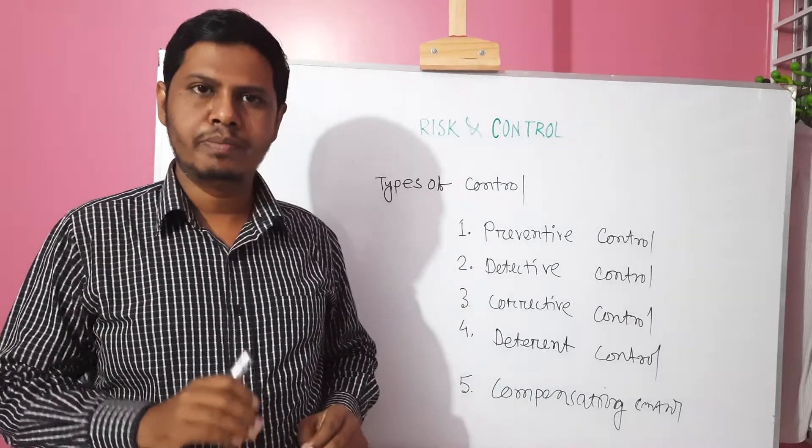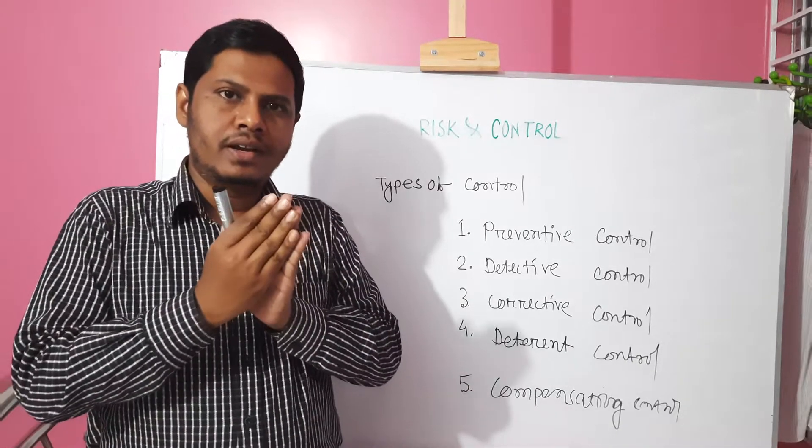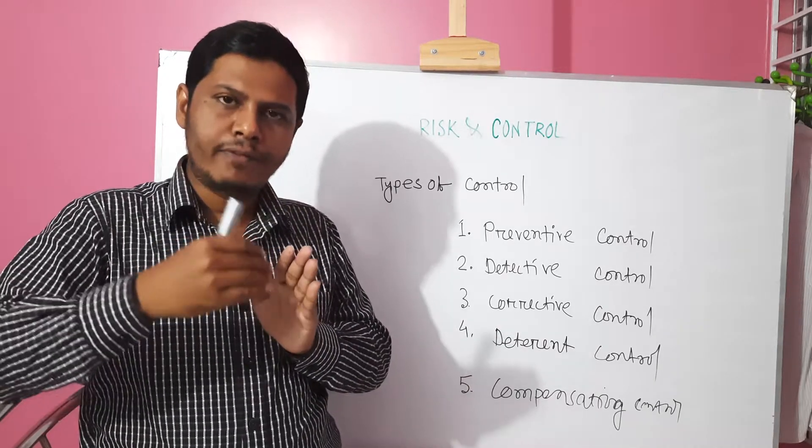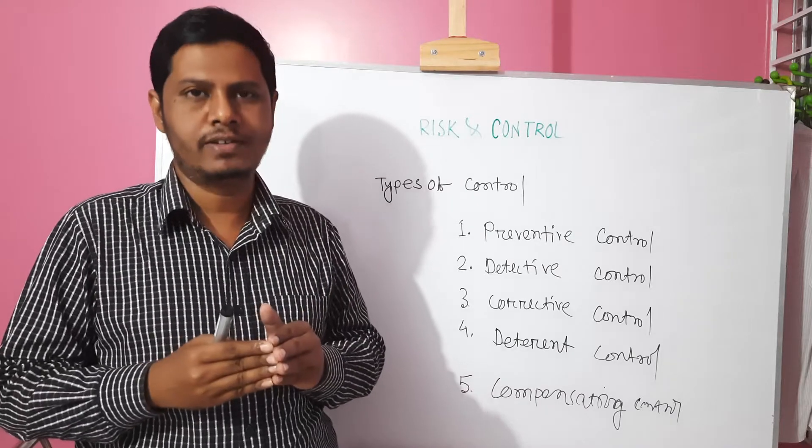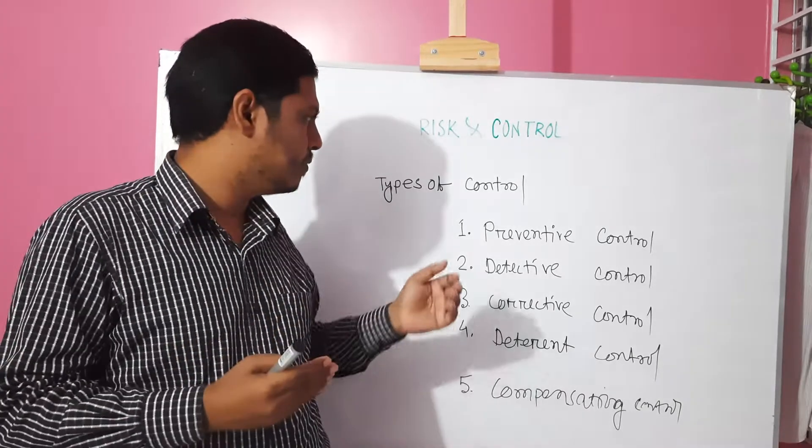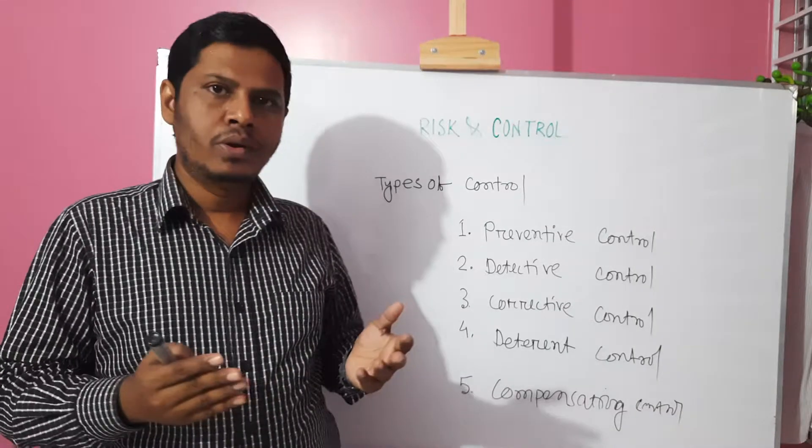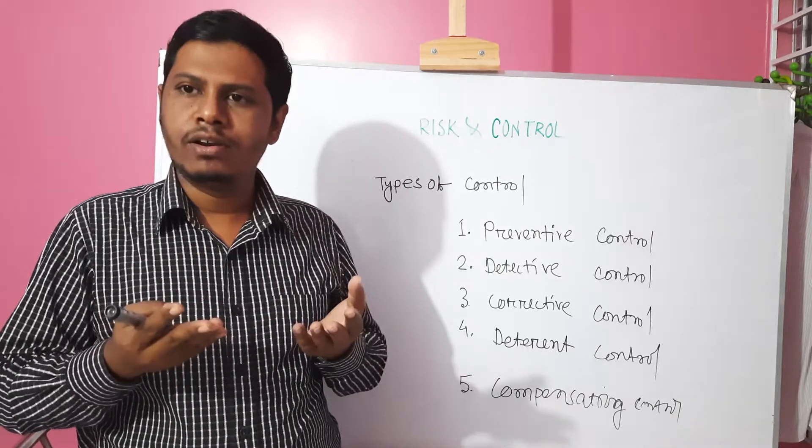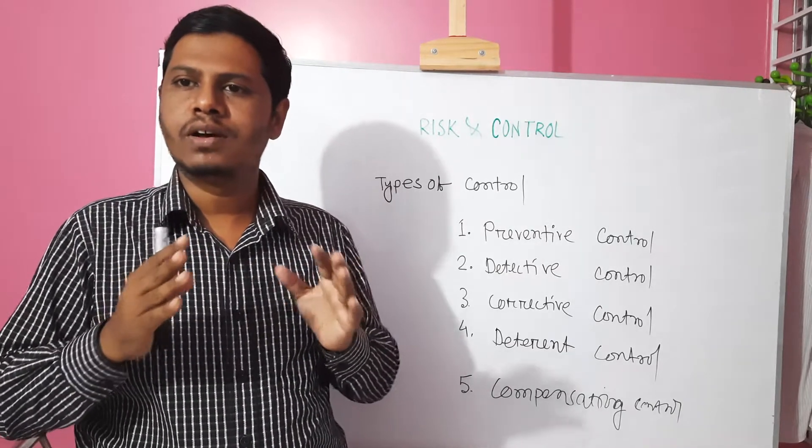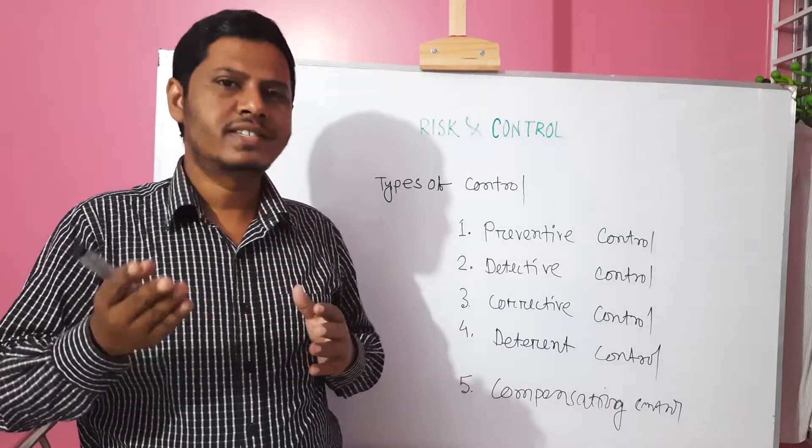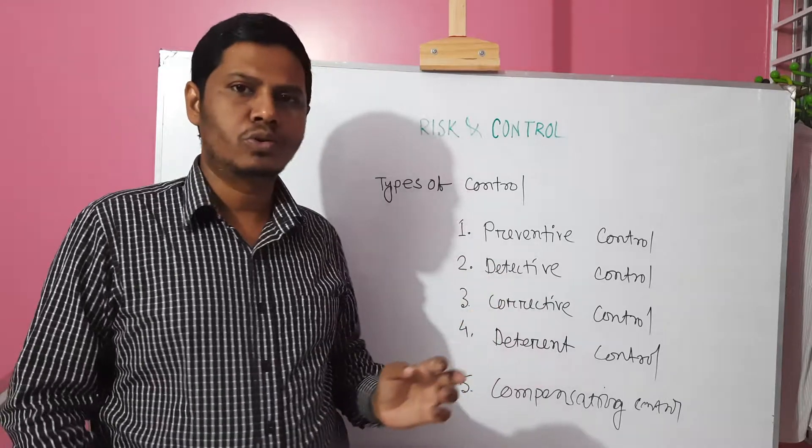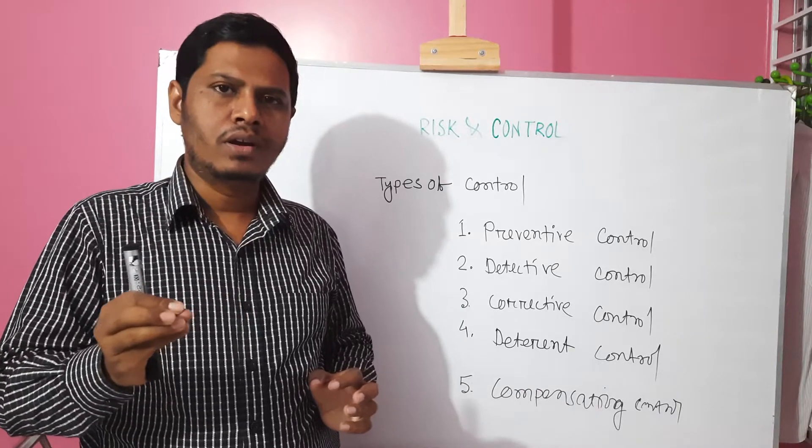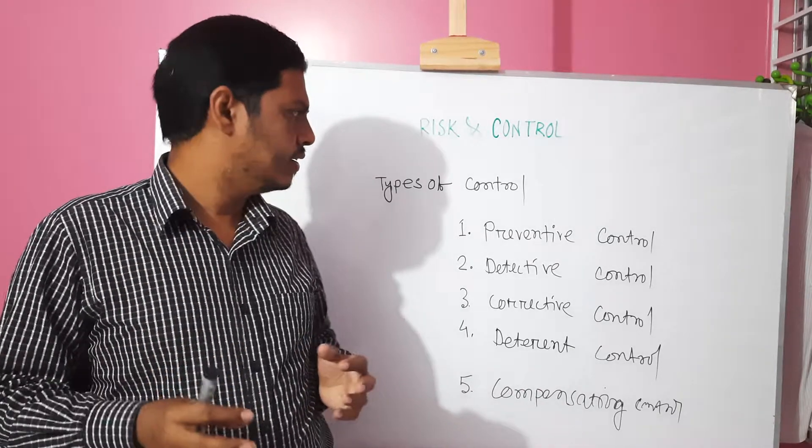Number one, preventive control. Prevent, that means that prevent to occur any unexpected event. It's called the preventive control. Locked door or firewall or different types of security mechanisms. Security guard is an example of preventive control. There are lots of examples available in our CISA review manual or our CISSP official exam guide.